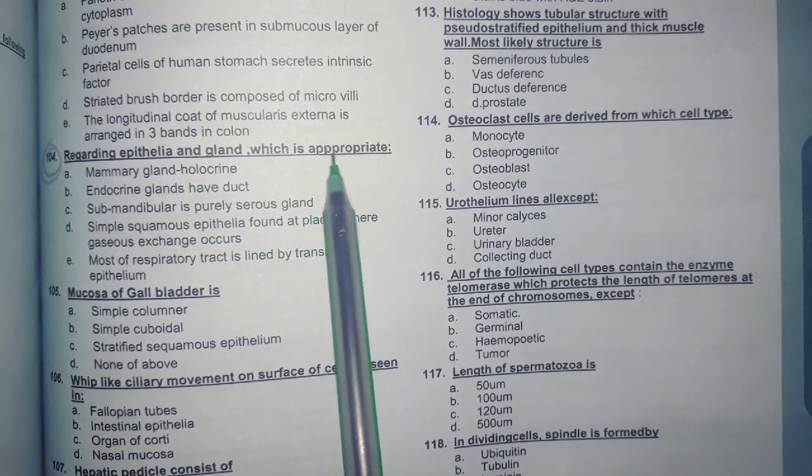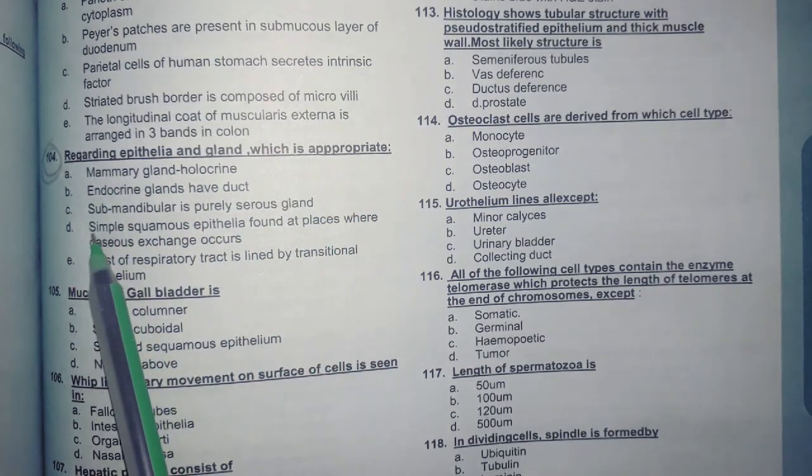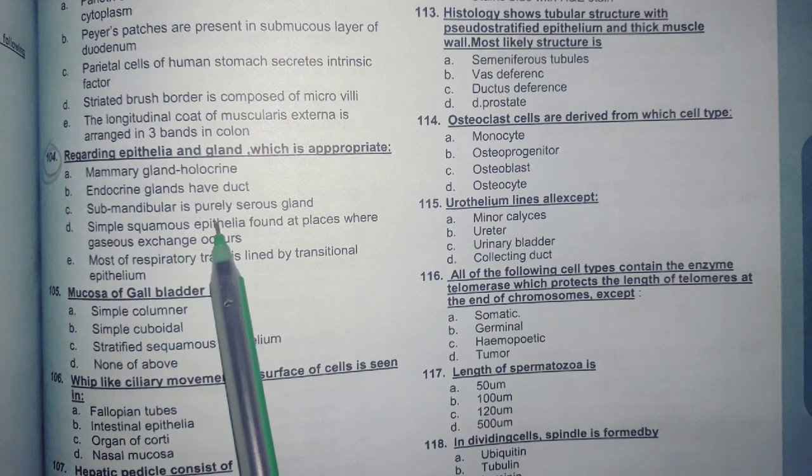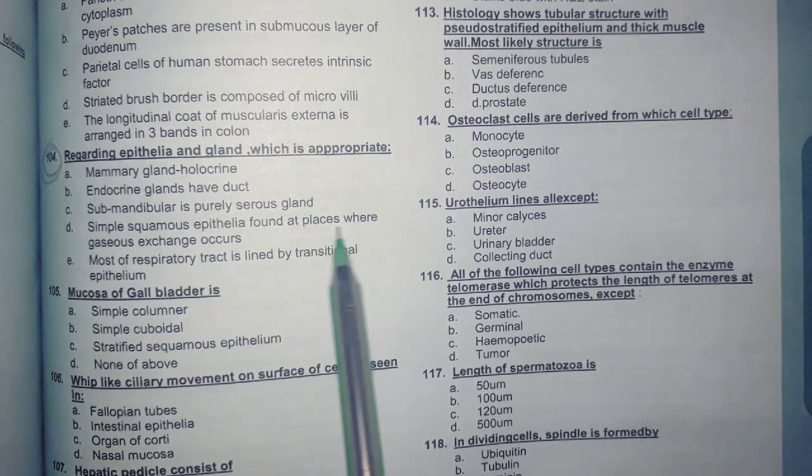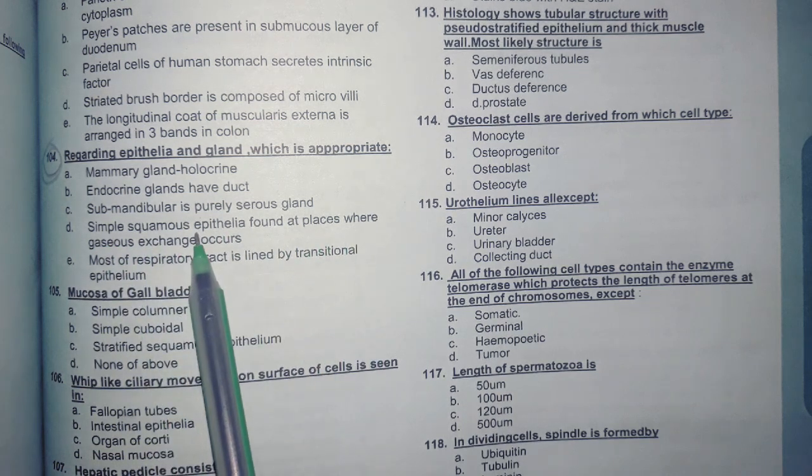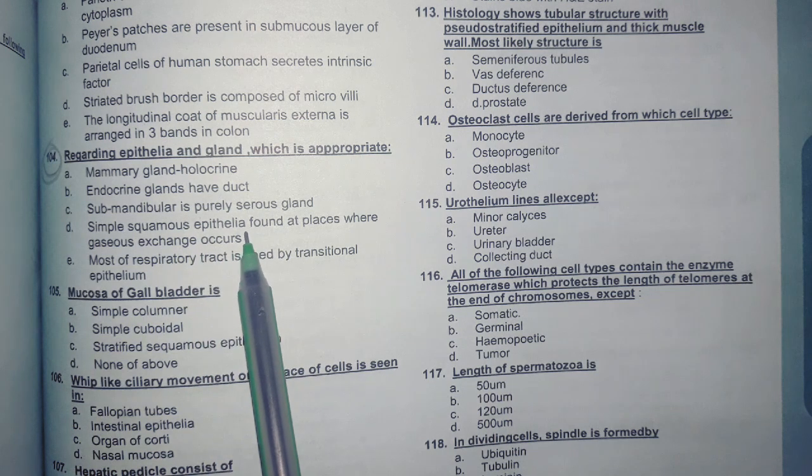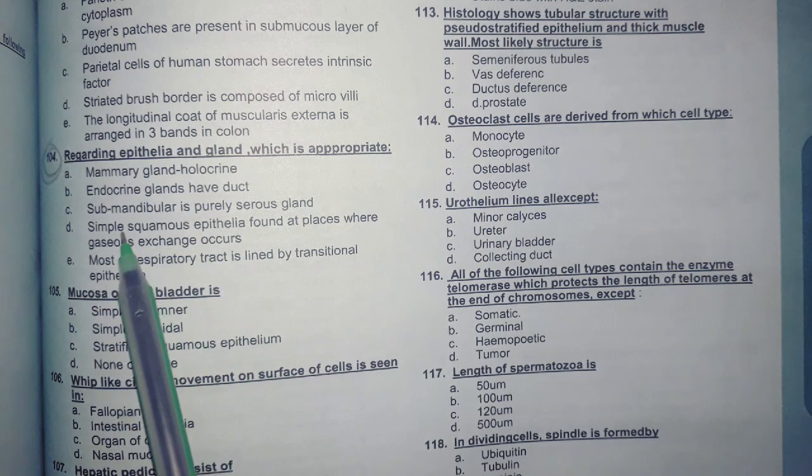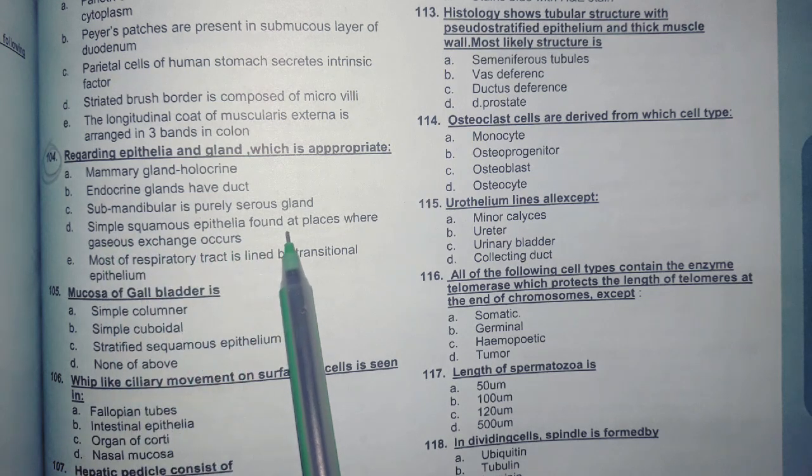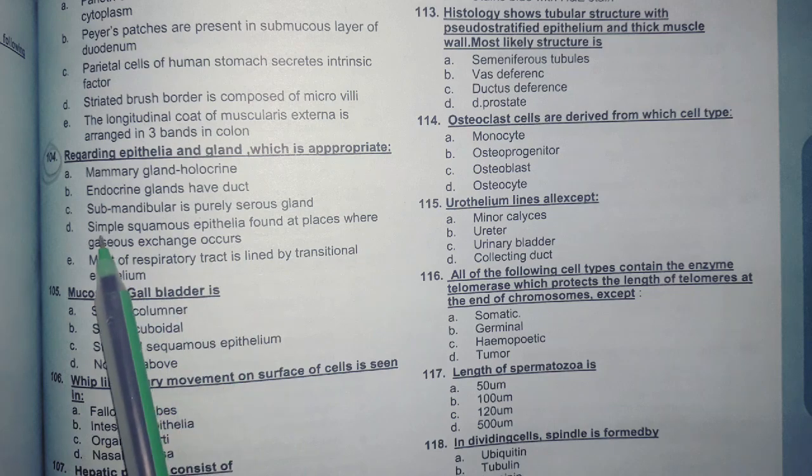Regarding epithelia and gland which is appropriate, you can read all and the answer is going to be like simple squamous epithelium found at the place where gaseous exchanges occur. As we know that the simple squamous epithelium is present in alveoli and the gaseous exchange occurs in alveoli. So the answer will be simple squamous epithelium found at place where gaseous exchange occur.